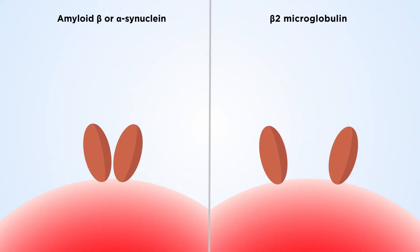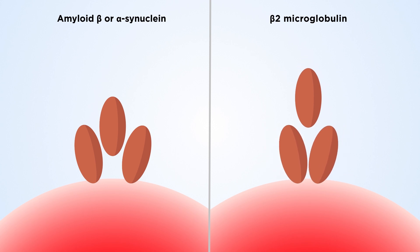Amyloid beta and alpha-synuclein tend to invite more peptides to network by making more space for them. On the other hand, beta-2-microglobulin tends to invite more peptides by reducing the open space over the gold surface.